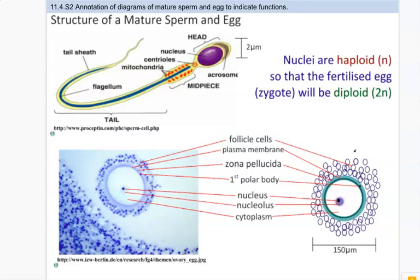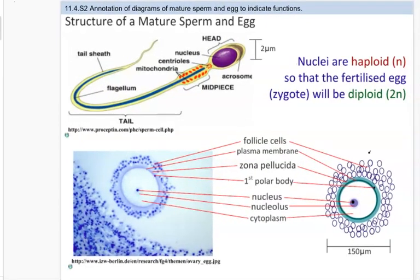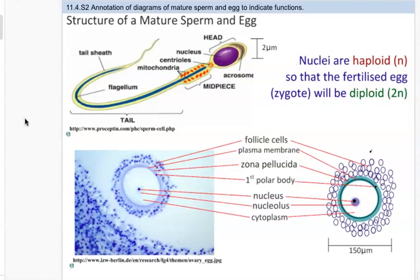In order to understand more about fertilization of egg and sperm, you also need to know more about the structure of both sperm and eggs. The IB does want you to be able to annotate diagrams of both sperm and eggs and their major structures and functions. The best way to learn how to annotate something is to be able to draw it first, and then you'll be able to pick out the parts and describe what they each do.